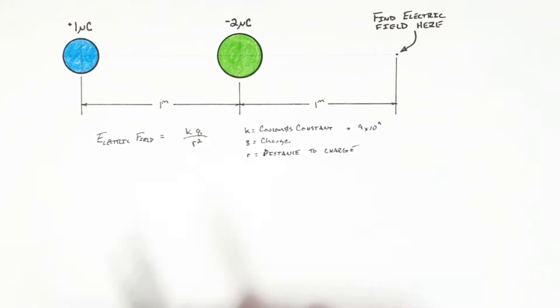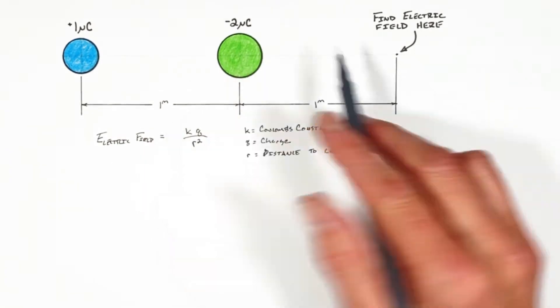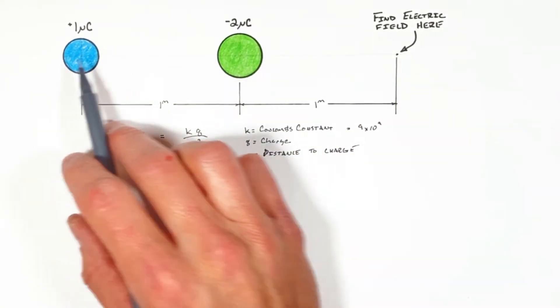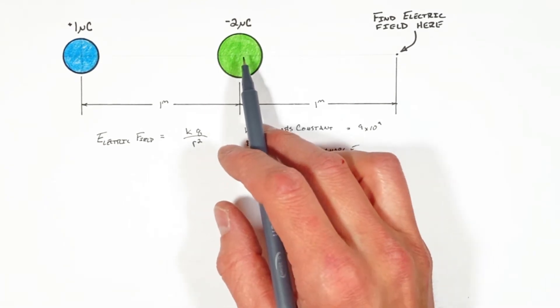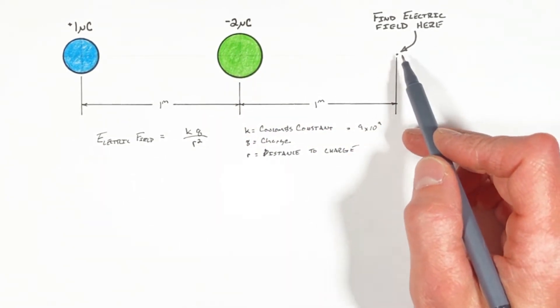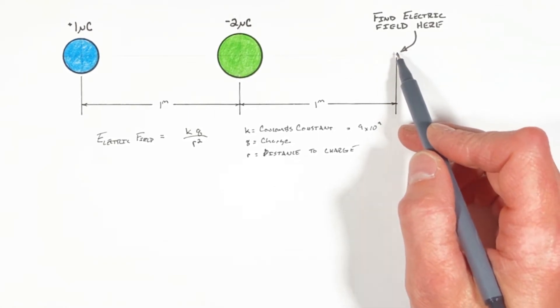The answer actually is both. Now each charge is producing its own electric field right here at this point. The catch is because we have two different charges, we're going to have two electric fields here. But what we're trying to solve for today is really the net or the total electric field at this point as a result of both charges.